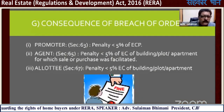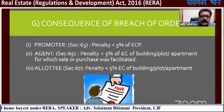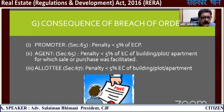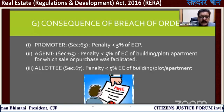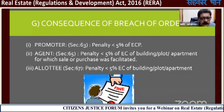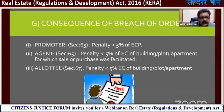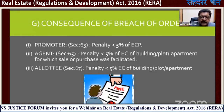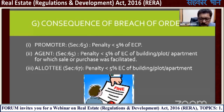Consequence of breach of order — Promoter, Section 63: penalty of 5% of the estimated cost of the project. Agent, Section 65: penalty of 5% of the estimated cost of building, plot, or apartment for which the sale or purchase was facilitated. Allottee, Section 67: penalty up to 5% of the estimated cost of building, plot, or apartment which he has booked.